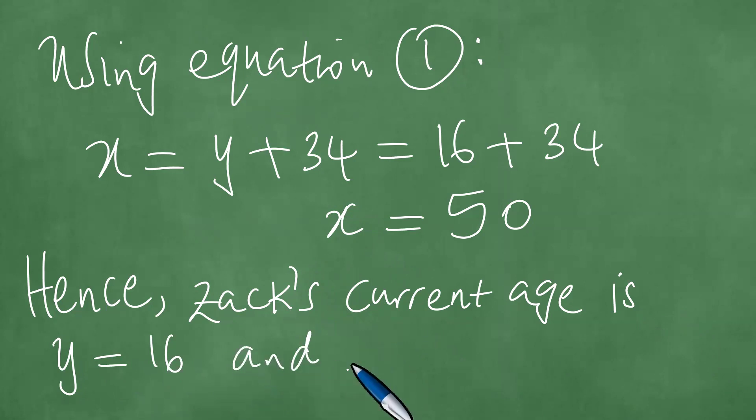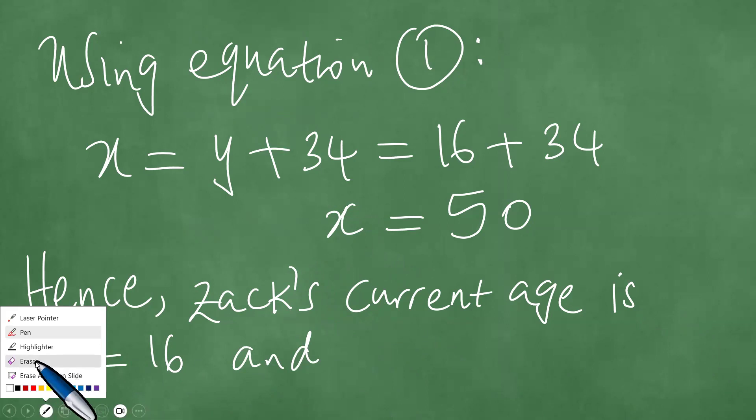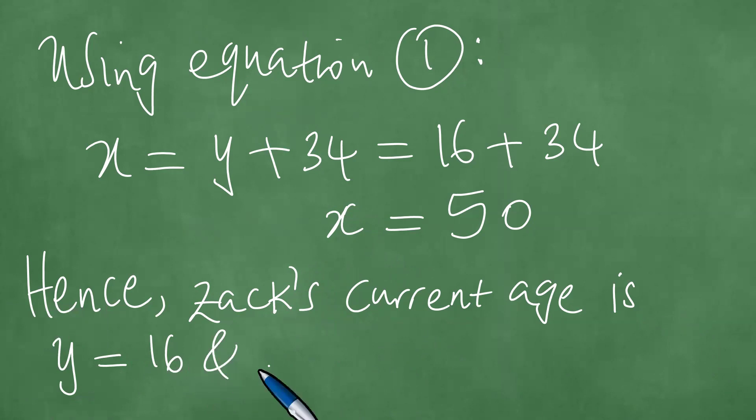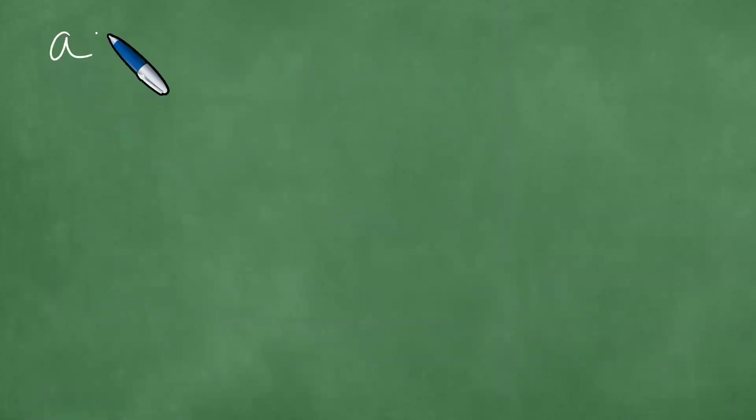And Penelope's current age. So Penelope's current age is X equals 50.